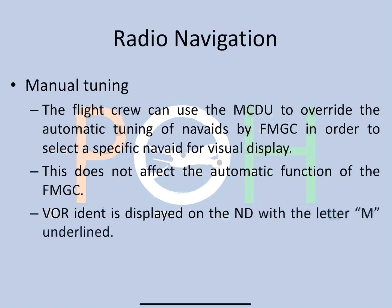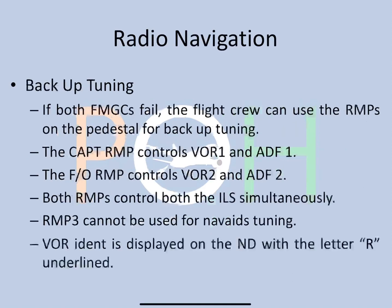In manual tuning, if you want to override the automatic tuning of the nav aid by the FMGC, you can do manual tuning. This is generally done during a departure or arrival — for example, if departing out of Delhi, you may want your VOR to stay with Delhi after departure and not automatically change to another station. This does not affect the FMGC's automatic function; if you clear the manual tuning it will go to the next station automatically. Manual tuning is identified by a letter 'M' underlined on the ND, with the identifier letters bold and large.